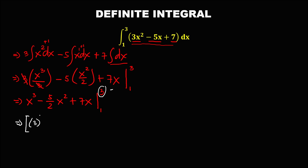Substituting x = 3: we get (3)³ minus (5/2)(3)² plus 7(3), then minus the same expression evaluated at the lower limit.